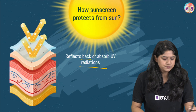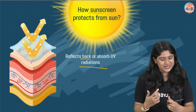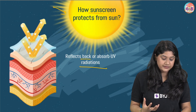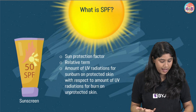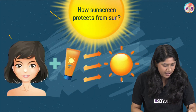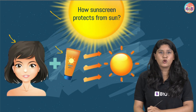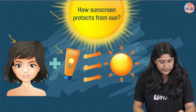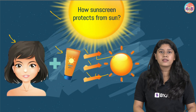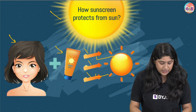Now we are clear about how these amazing sunscreens are protecting us. Let's take a further look and understand how these things happen. When we apply sunscreen on our skin, we can see that it will be reflecting the radiation back. Simple as that.